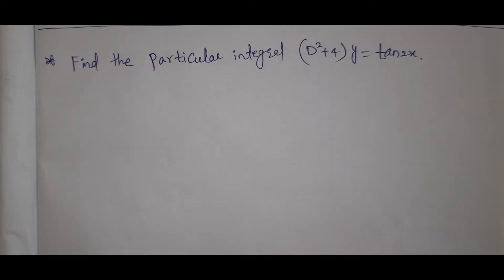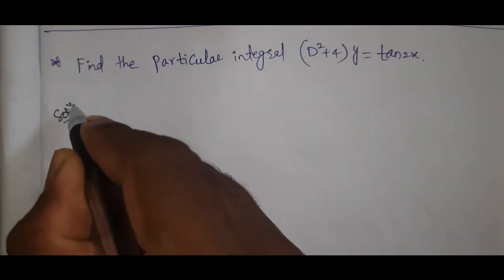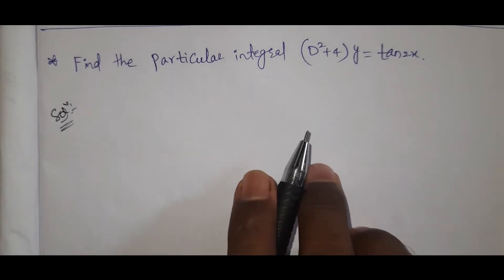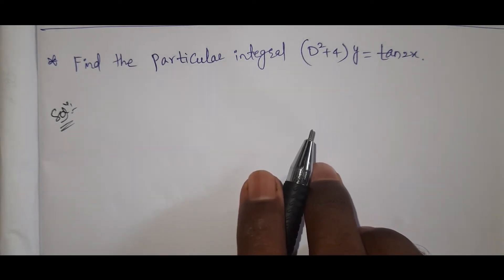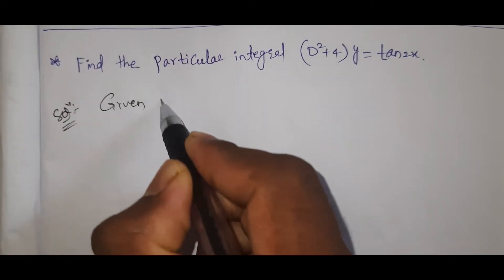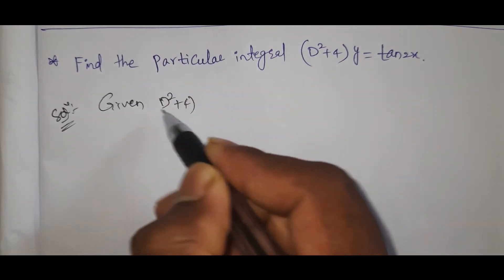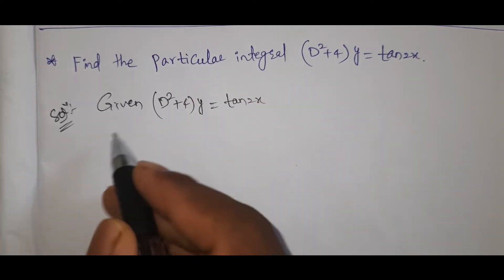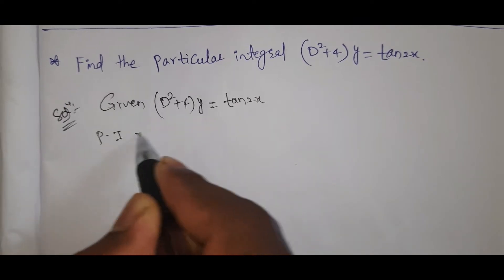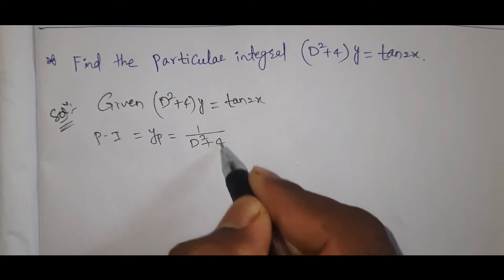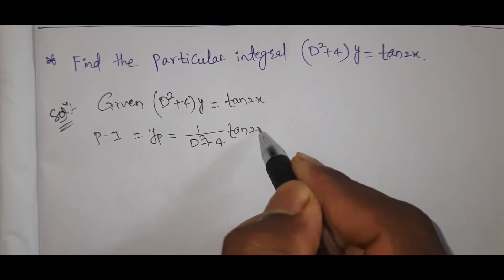This is the second order problem. This is the important part of the solution. If we find the particular integral, we will have the complementary function. Given (D² + 4)y = tan(2x), the particular integral yp equals 1/(D² + 4) into tan(2x).